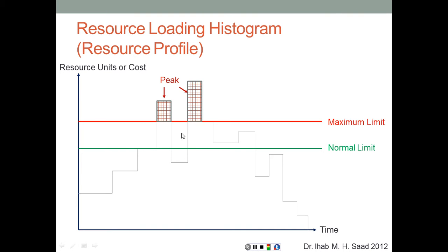We also notice troughs — areas where resources are available but not needed. Like in Tetris, the strategy is to fill troughs with peaks. By redistributing resources — moving peaks to fill gaps — we perform what will later be called resource leveling.